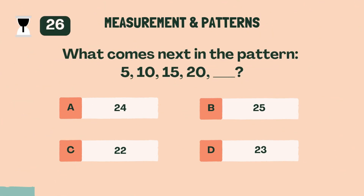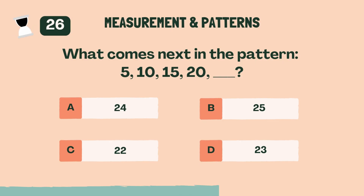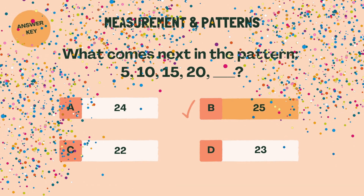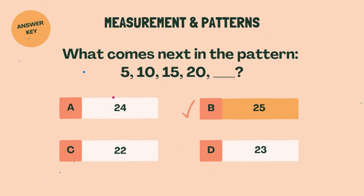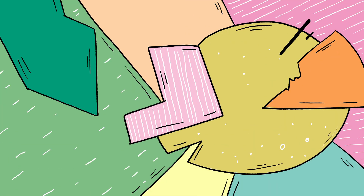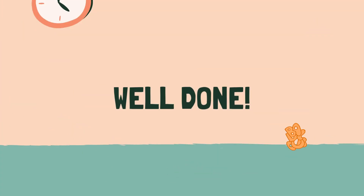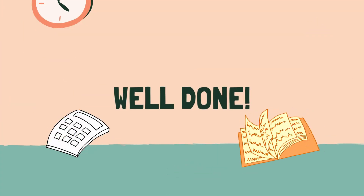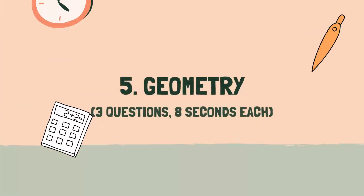What comes next in the pattern? 5, 10, 15, 20. B, 25. Well done. Let's move on to the next category.